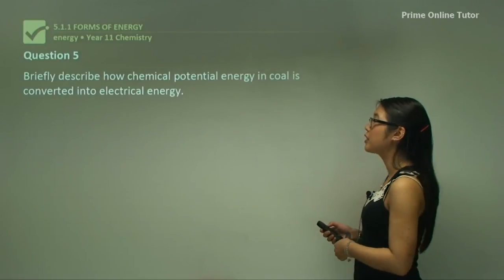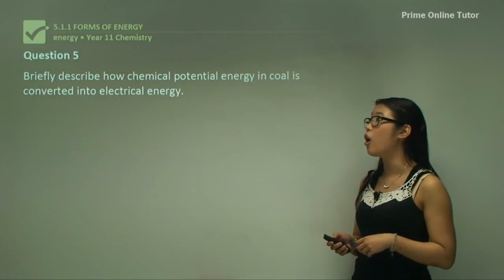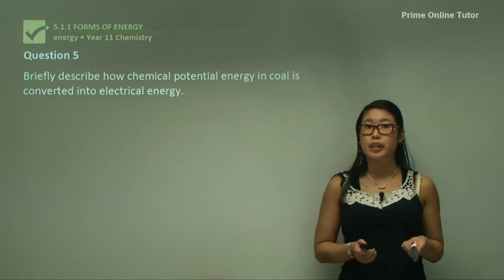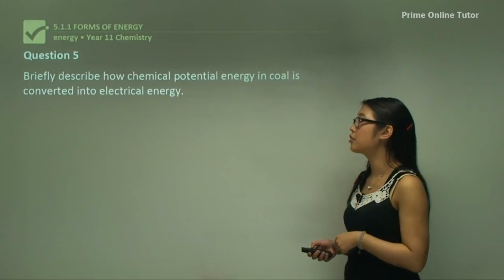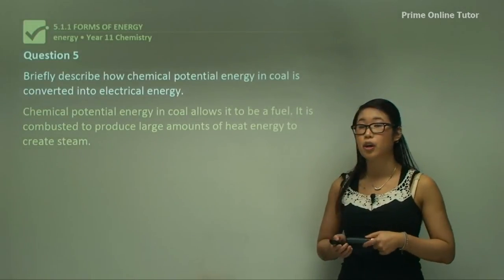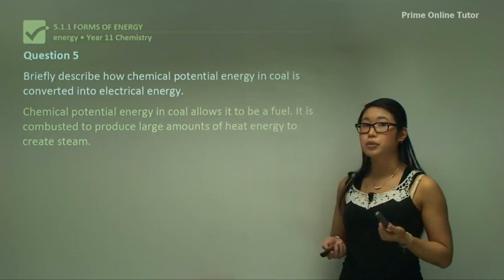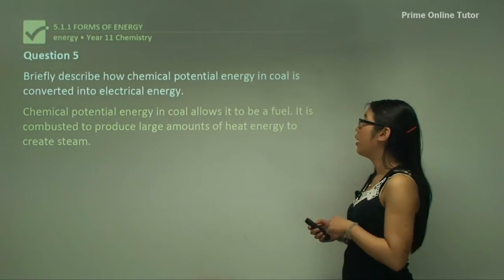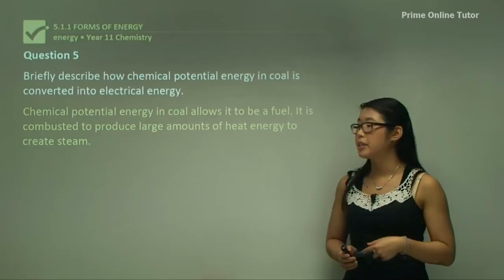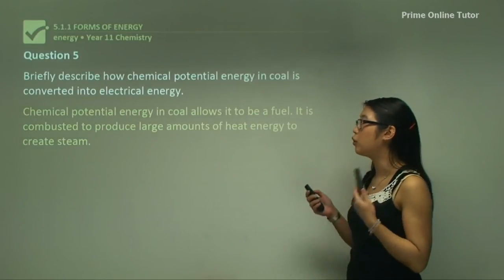Question five, briefly describe how chemical potential energy in coal is converted into electrical energy. So firstly, chemical potential energy in coal allows it to be a fuel. So remember, fuel releases a lot of energy for us. It is combusted to produce large amounts of heat energy to form steam.